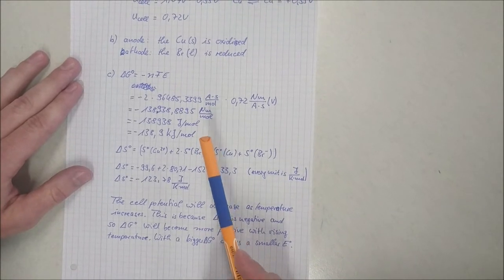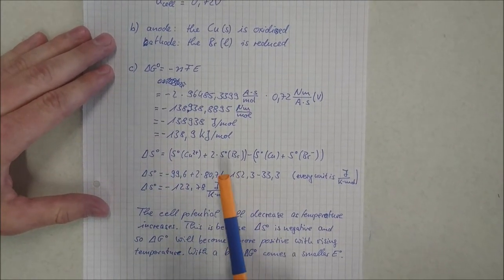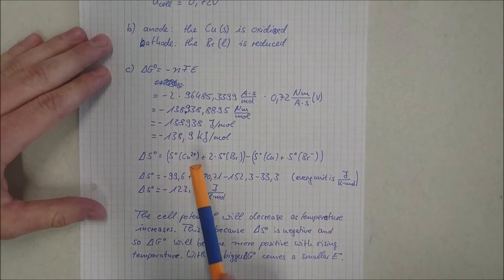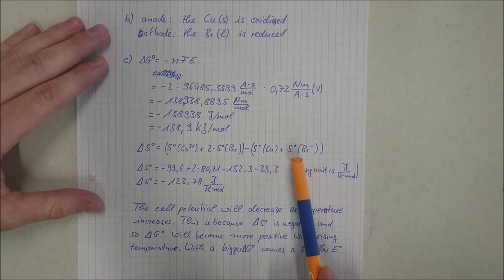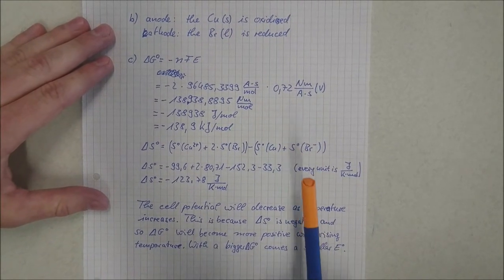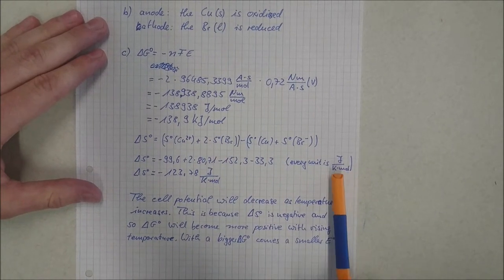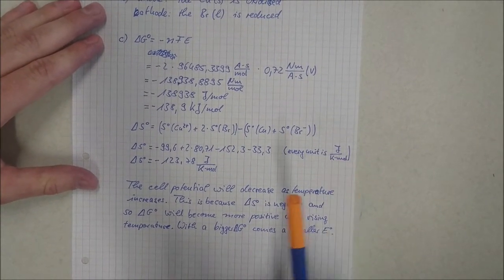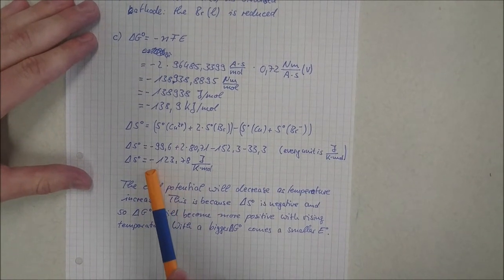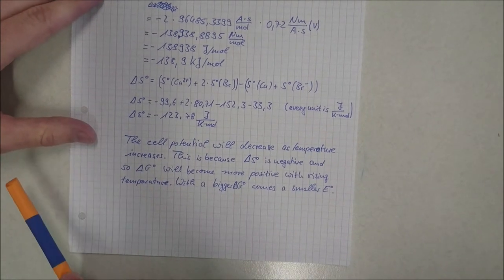For the entropy change delta S, you need the entropies of the products minus the entropies of the reactants. Putting it all together, with units of joules per kelvin per mole, you get minus 123.78 joules per kelvin per mole.